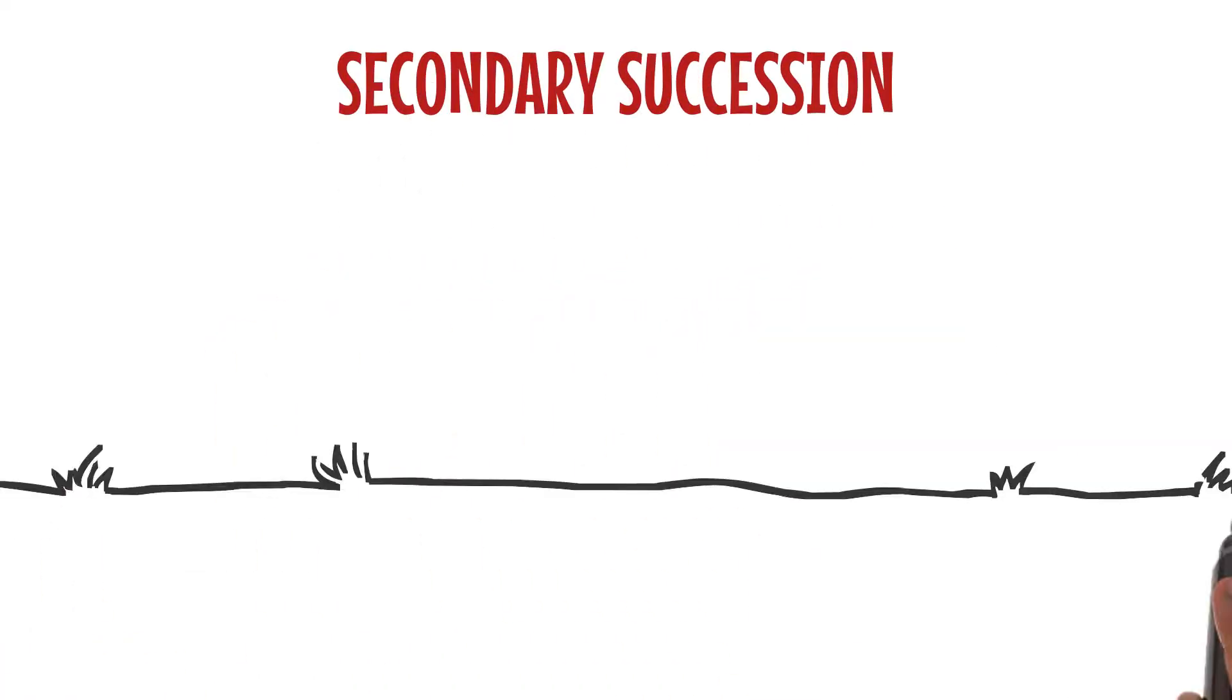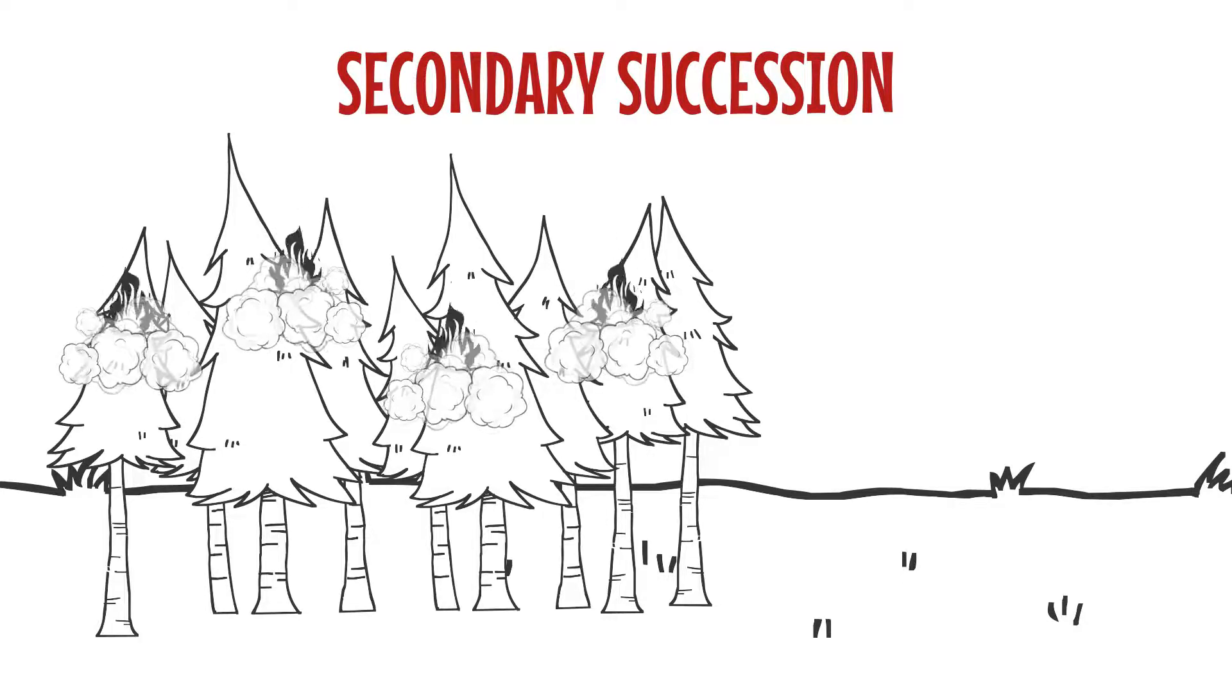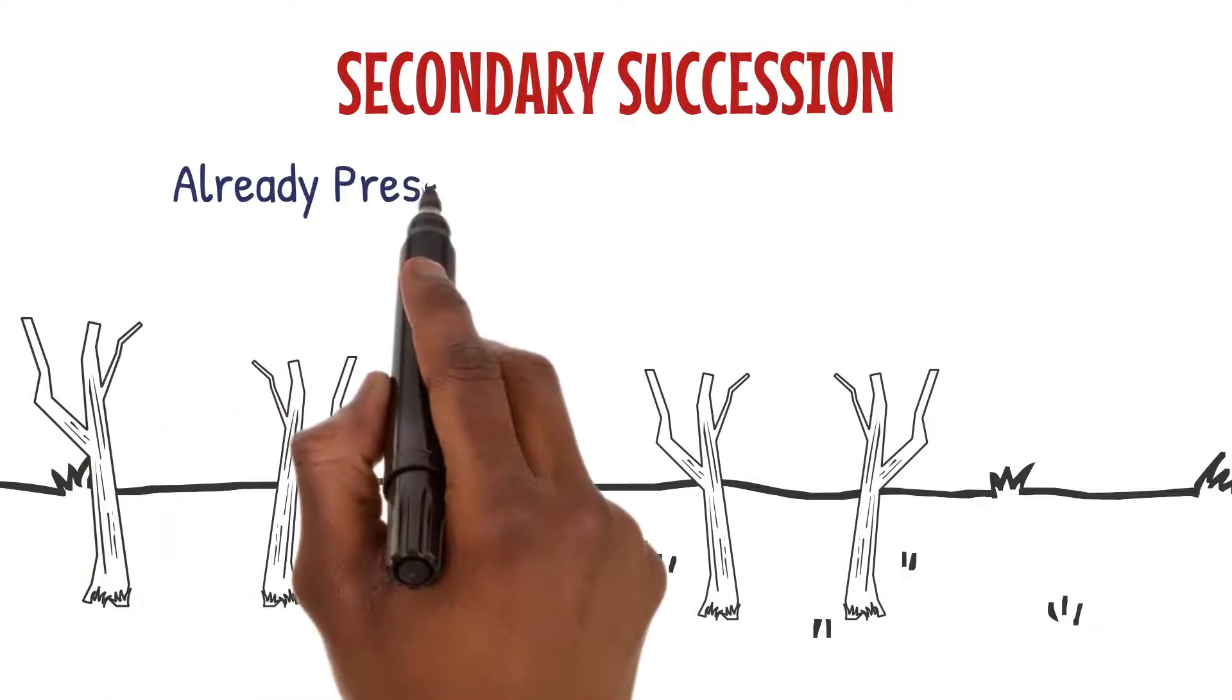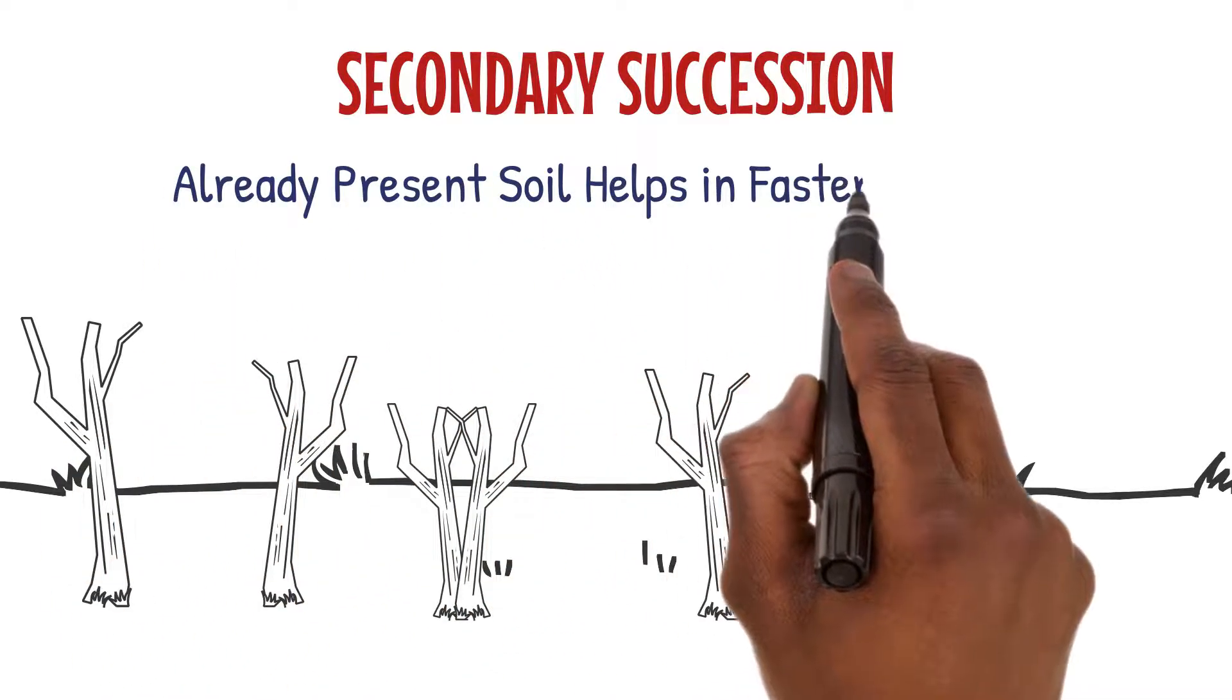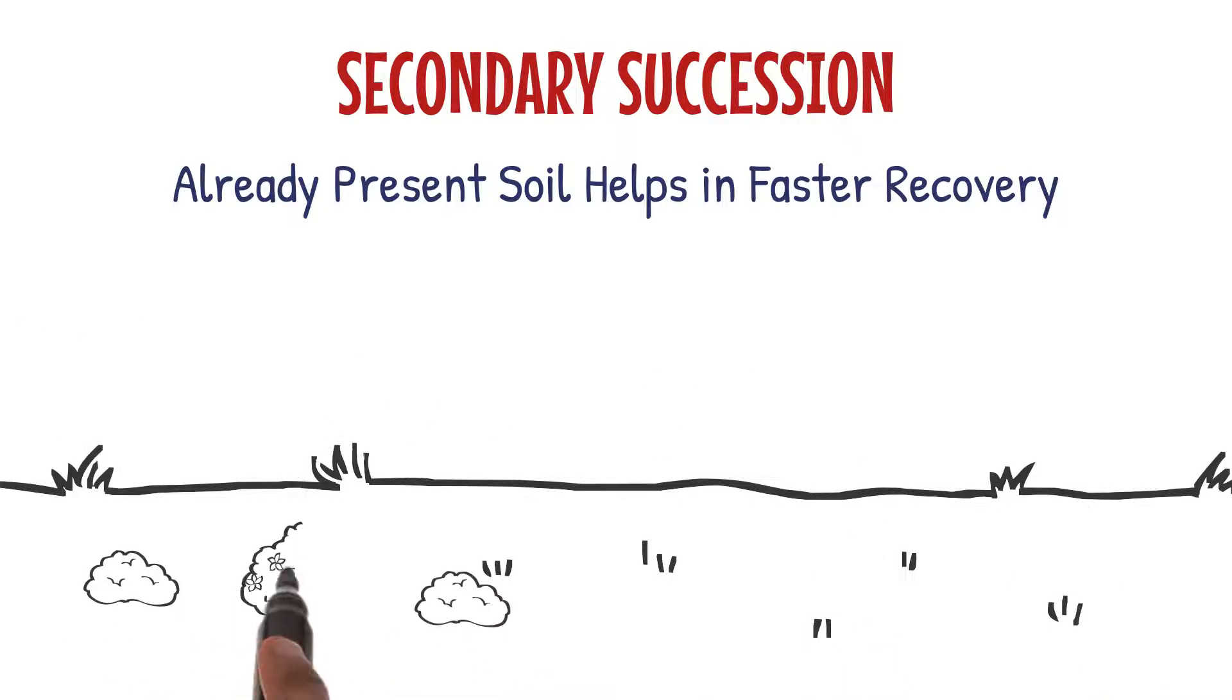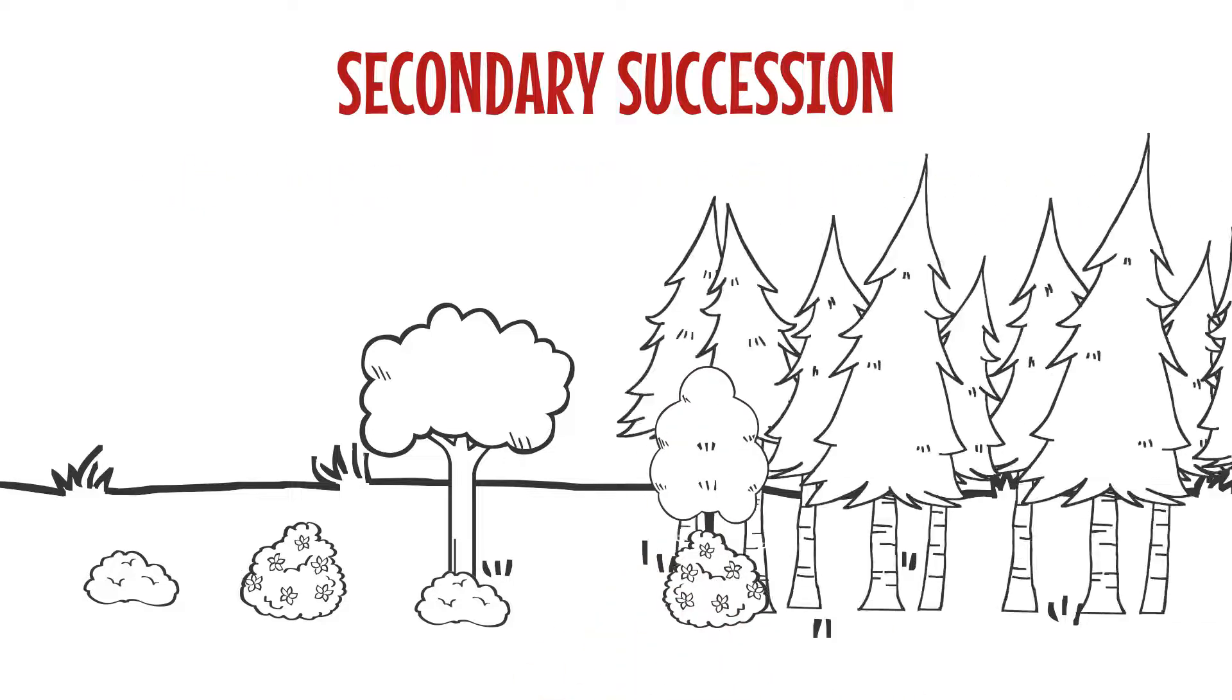Secondary succession, on the other hand, occurs in areas where an ecosystem has been disturbed but not completely destroyed, like after a forest fire. Here the soil is already present, so the recovery process is faster. Shrubs and grasses appear first, followed by small trees, and eventually the forest regenerates.